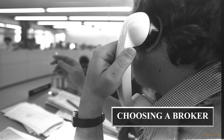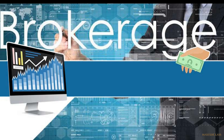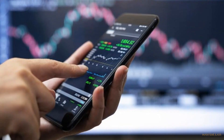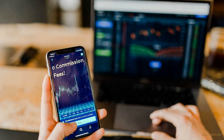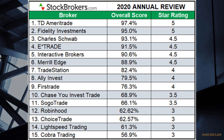To trade options, you need an online brokerage account. A brokerage account is simply an account that allows you to purchase assets such as stocks, options, bitcoin, etc. There are various online brokers to choose from. Most brokers now have commission-free trading, thanks to Robinhood. The top online brokers are TD Ameritrade, Fidelity Investments, Charles Schwab, E-Trade, and Interactive Brokers.